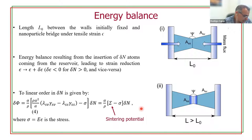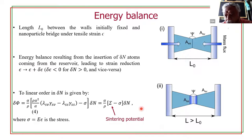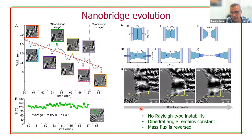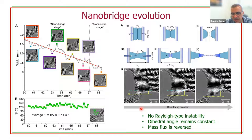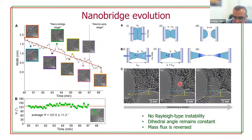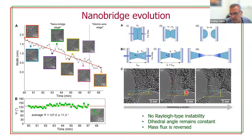Ryan asks: when you talk of flux, are you talking of zirconium, oxygen, or vacancies? Capaz responds: we believe we cannot change too much the charge balance. There may be some local changes in stoichiometry, and even the presence of the surface may lead to different stoichiometries. But as a whole, we don't see formation of a metallic zirconium phase or anything like that. We believe that roughly we must keep the ZrO₂ stoichiometry during the whole process, so if there is mass flux, ZrO₂ units should be coming or leaving the bridge region.